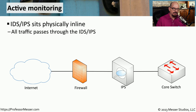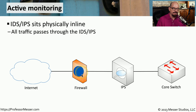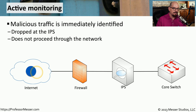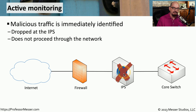Here's a better view of this active monitoring configuration. We'll put some traffic on the network. This traffic will pass through the firewall, it will pass through the IPS where it will be evaluated. And if this traffic is legitimate and doesn't contain any vulnerabilities, it will pass on through to the core switch. The advantage of having active monitoring is that if traffic does come through the network and passes into the IPS, the IPS can identify potential attacks and block them immediately. At that point, the traffic is simply removed from the network and it's never sent through to the core switch.